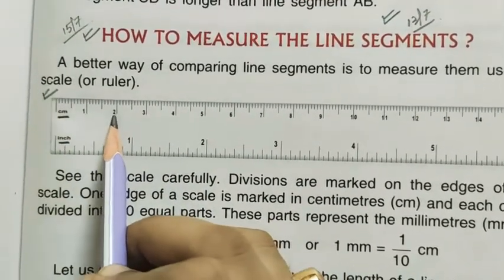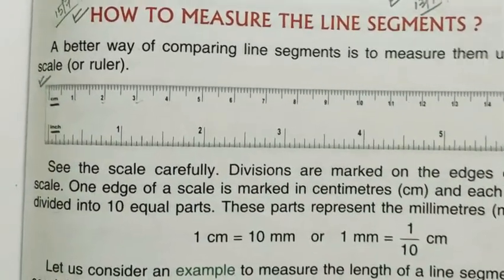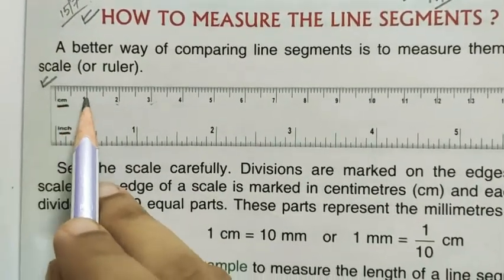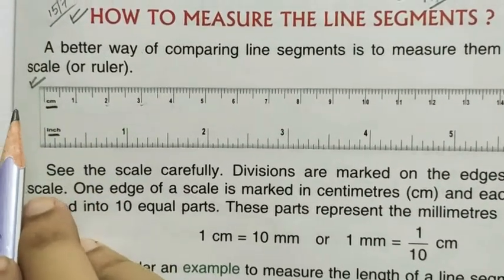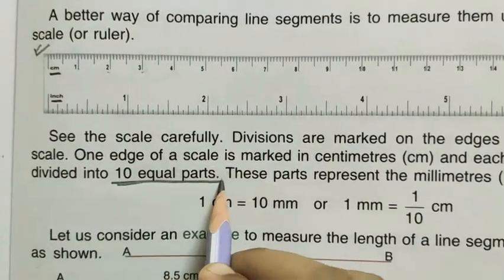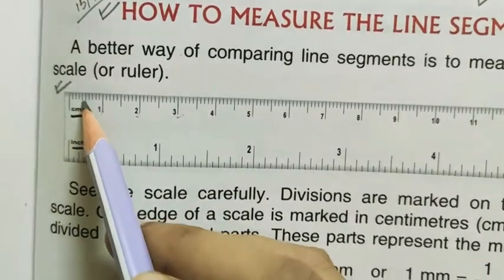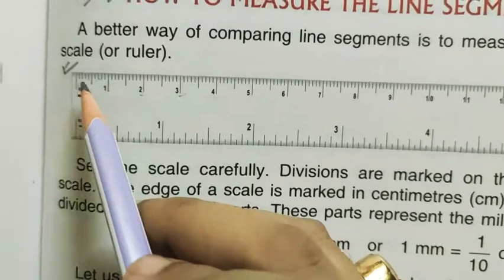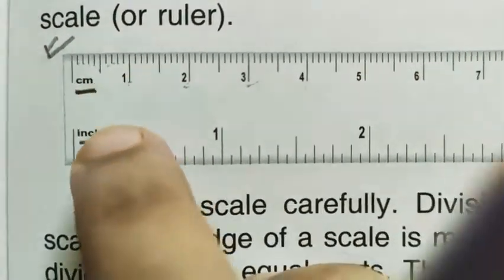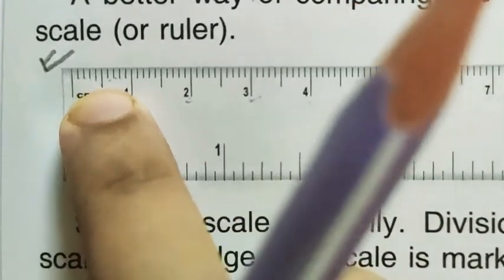Between one big division, there are 10 small equal parts or 10 small divisions. One, two, three, four, five, six, seven, eight, nine, ten. So let's have a closer look. In between this big one division, there are 10 small divisions.